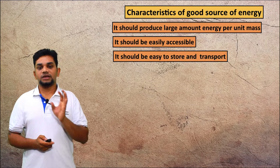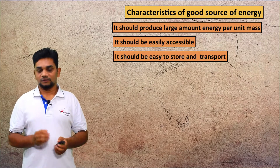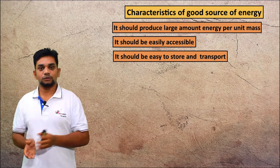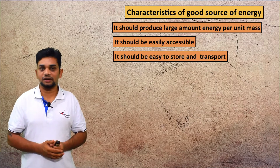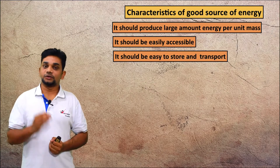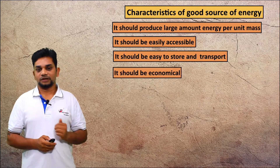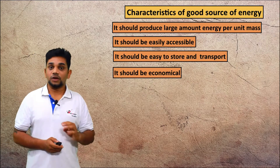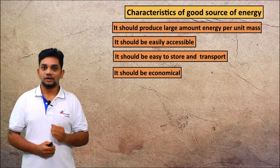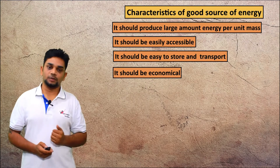Next, it should be easy to store and transport. We need to transfer and transport the energy from one place to another place in some situations. So the next quality of a good source of energy is it should be easily transportable. Next, it should be economical. We are not ready to spend a lot of money for energy; it should be less expensive. That is the meaning of economical.